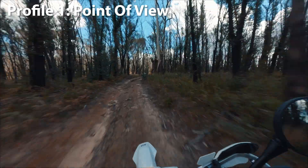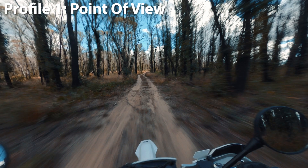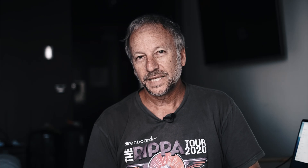I've now refined my point-of-view settings. The middle column is if you're not going to do any post-production or editing, and the column on the right are the settings if you are planning to do post-production. I'm now targeting an ideal shutter speed of 1/250th of a second, whereas I used to do 1/125th. To achieve that, you generally want to use an ND16 filter in bright light and an ND8 if you're in cloudy or overcast conditions. So there you have it — I hope you found those tests useful. There's a ton of information I couldn't really cover in the video, but if you've got any questions, stick them in the comments below and I'll happily address them.